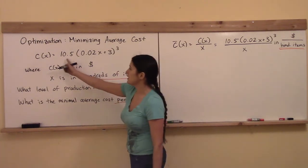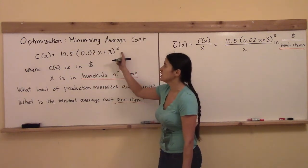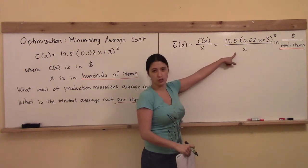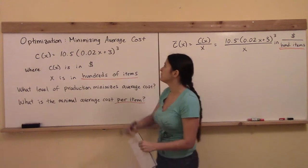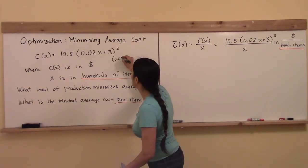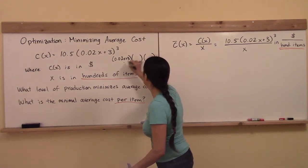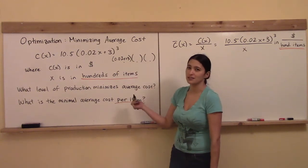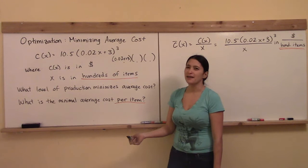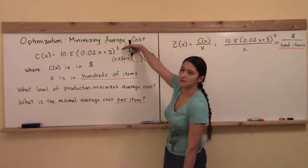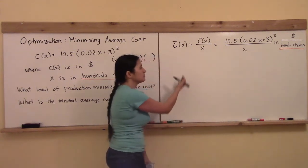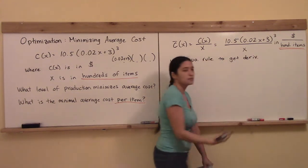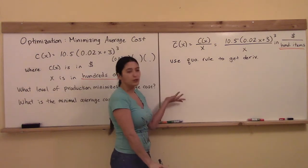Here, they haven't been so nice about it. They said total cost is 10.5 times the quantity (0.02x + 3) cubed. So I have two choices: either divide by x and use the quotient rule, or foil this out — but this is a cubed, so I'd have to multiply (0.02x + 3) by itself three times. If this was squared I would totally do it, but a cubed is too hard. If it's cubed or higher, the easiest thing is to use the quotient rule to get the derivative. The bottom is just x, so it's not too complicated. I will choose to use the quotient rule.